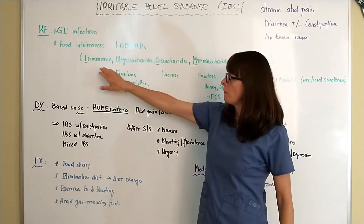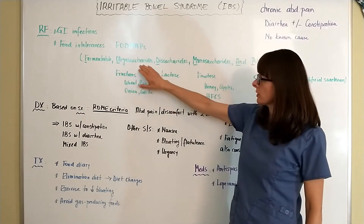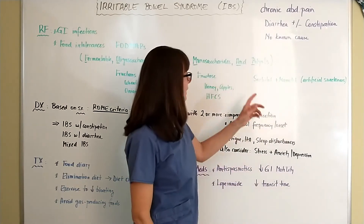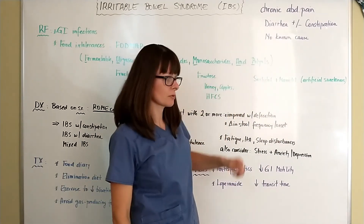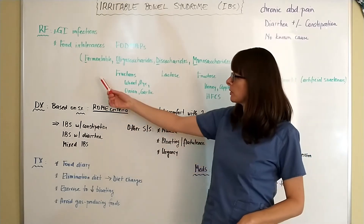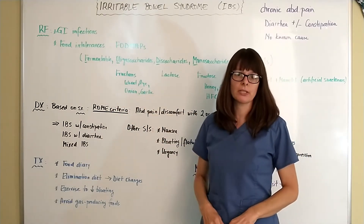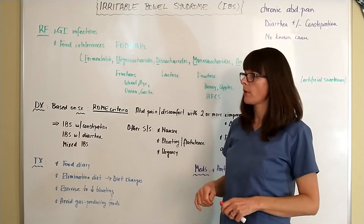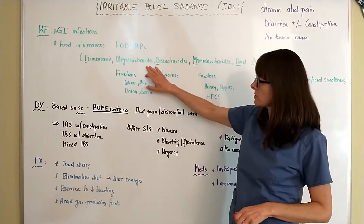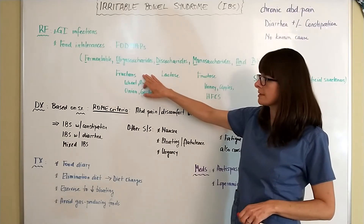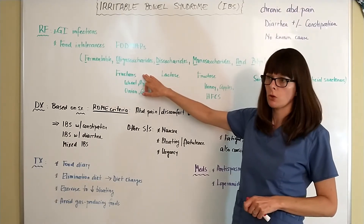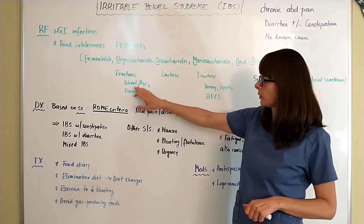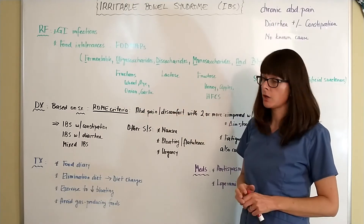FODMAPS stands for fermentable oligosaccharides, disaccharides, monosaccharides, and polyols. Fermentable is pretty self-explanatory — that's anything fermented like sauerkraut or kimchi. Oligosaccharides are also referred to as fructans — don't confuse that with fructose. Fructans are sugars that occur in things like wheat and rye, as well as onion and garlic.